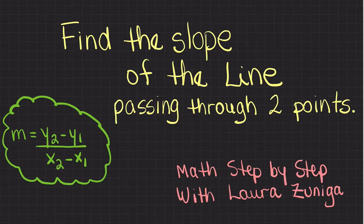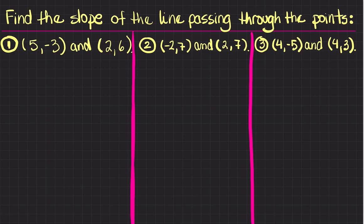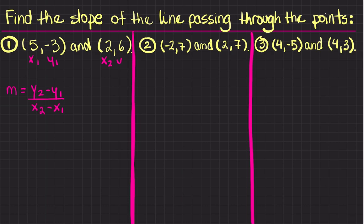In this video we're going to find the slope of the line given two points. I have three examples here, and three different things are going to happen. First, I need to write the formula for the slope, which is m equals y2 minus y1 divided by x2 minus x1. I'm going to label my points so I can plug in the values for x and y.